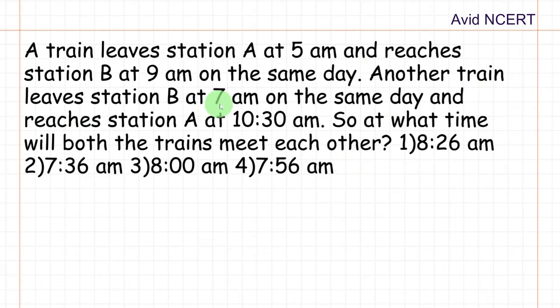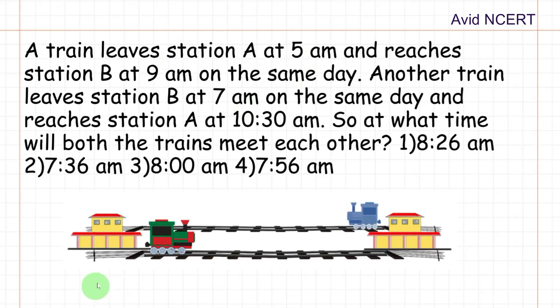So the data we have here is the starting time and ending time of two trains. From the first sentence, if this is station A and this is station B, then let's have this as train A and this as train B.